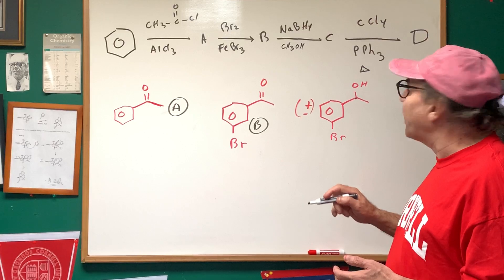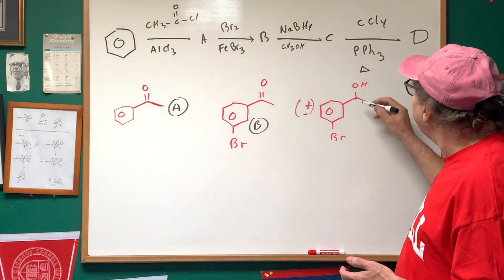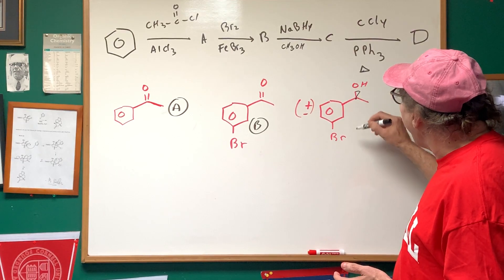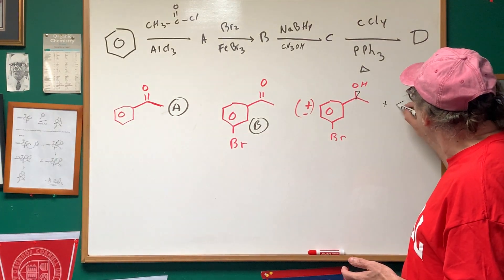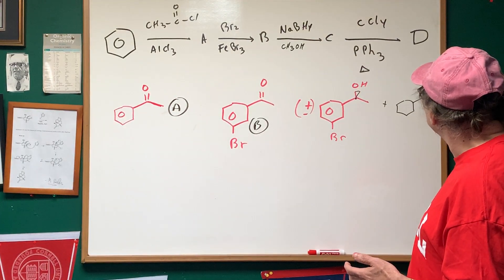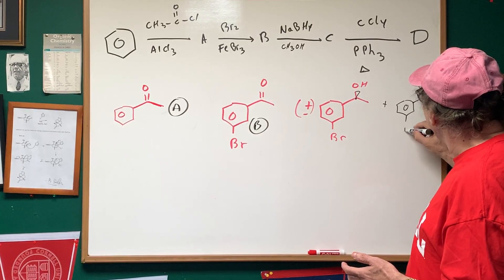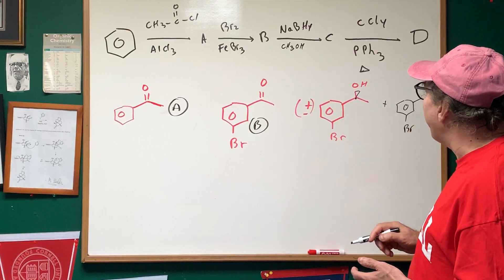And therefore I wrote plus minus. So plus minus means that this can either come in as a wedge, or it could have came in as a dash, like this. So, therefore, we write plus minus. Now,